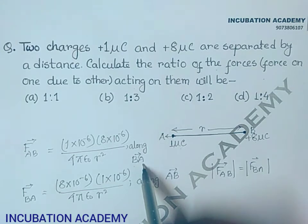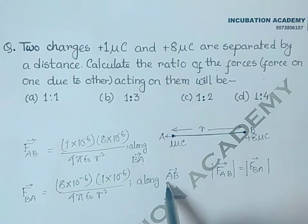One is acting along BA, another is acting along AB, so they are acting along the opposite direction, but their magnitudes are same.